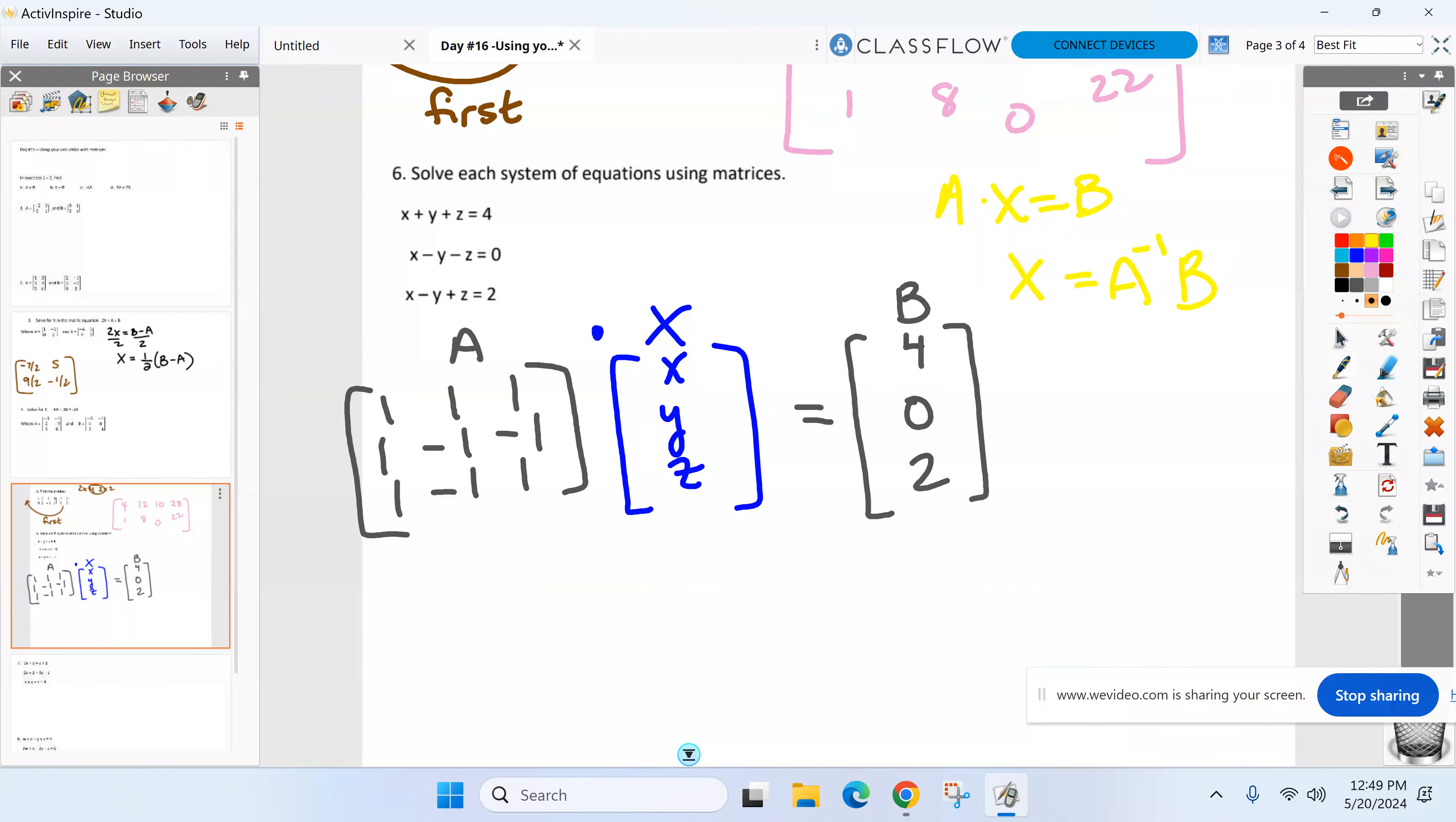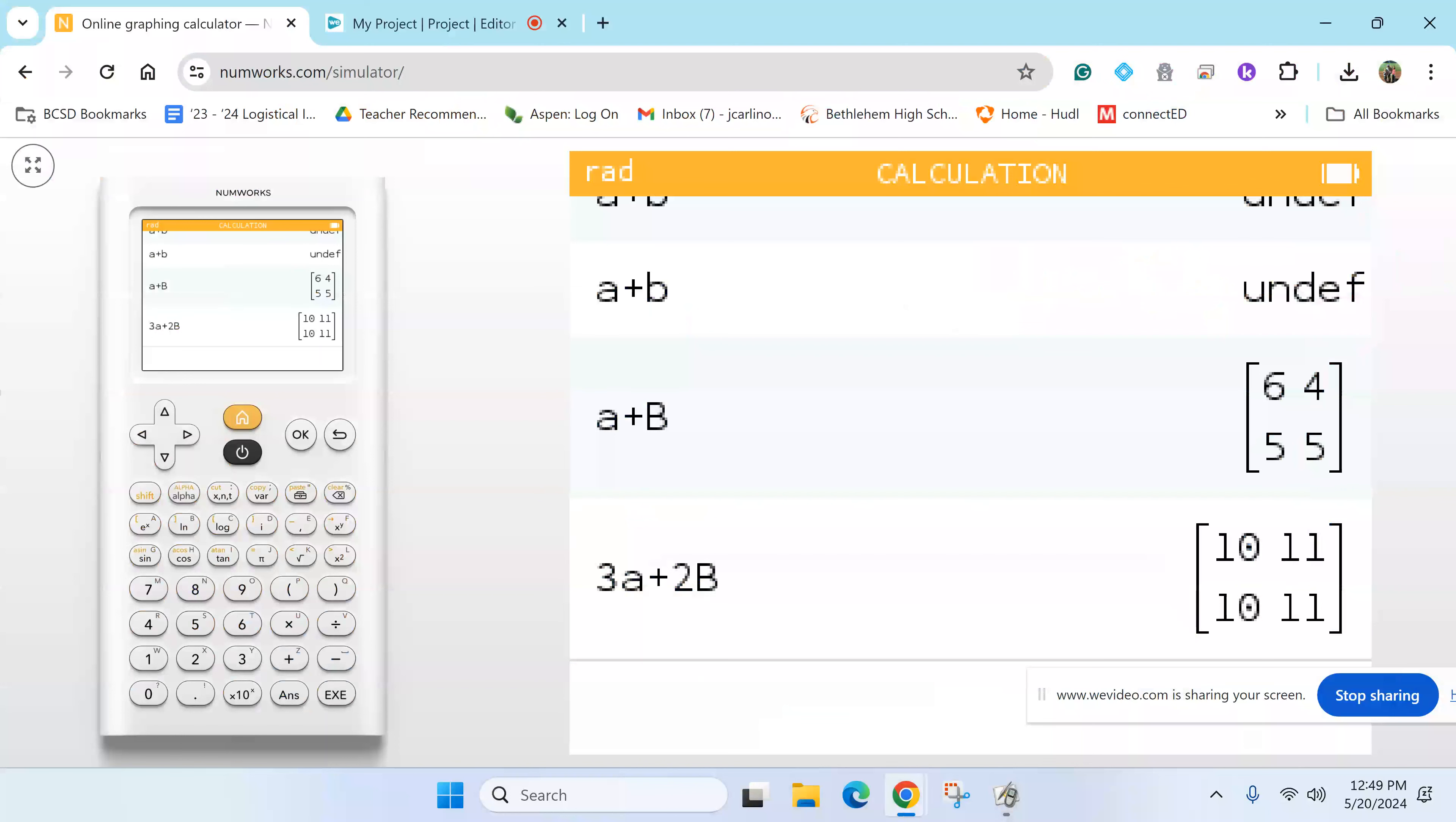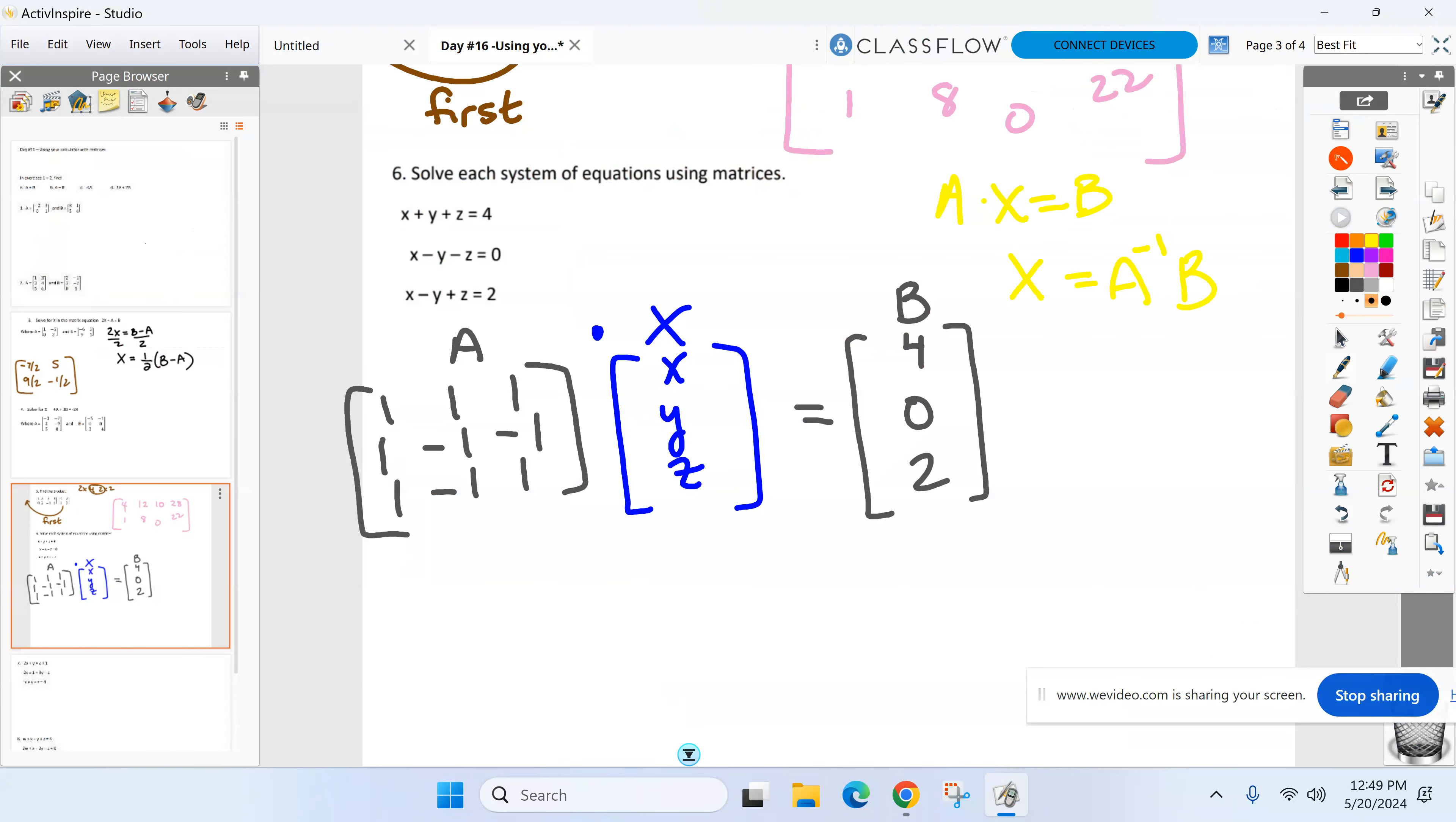You will store matrix A in, you'll store matrix B in. And then in the calculator, you'll do alpha A and then raise it to the negative one by pressing XY. And then multiply that by matrix B. So that's how you do all the X's and the Y's - you store in, store in, and then do A to the negative one times B to figure out your answers.